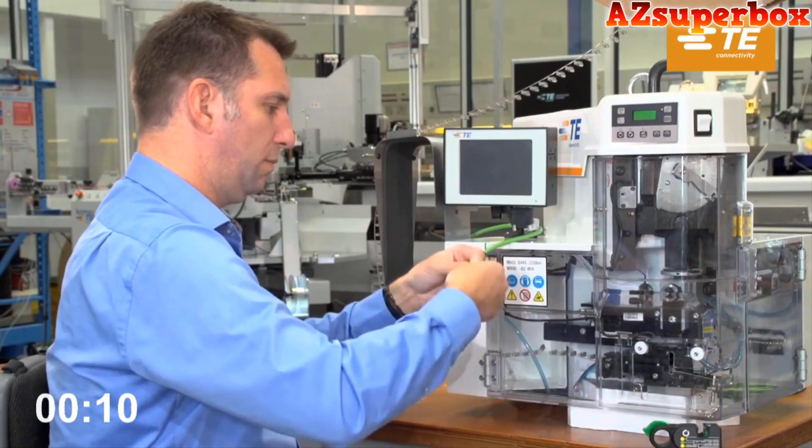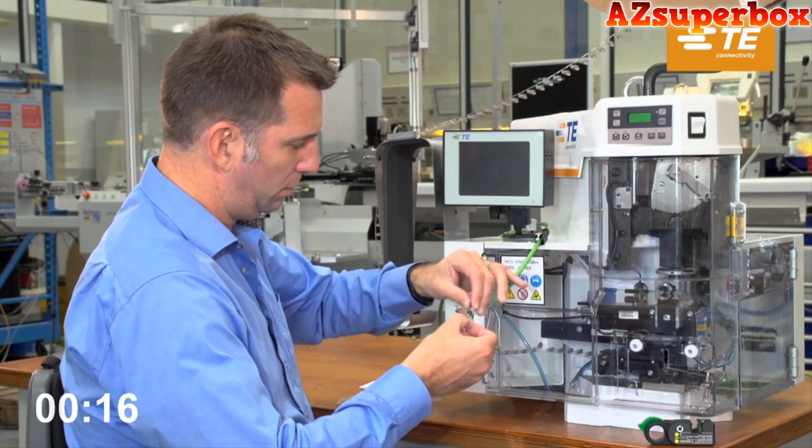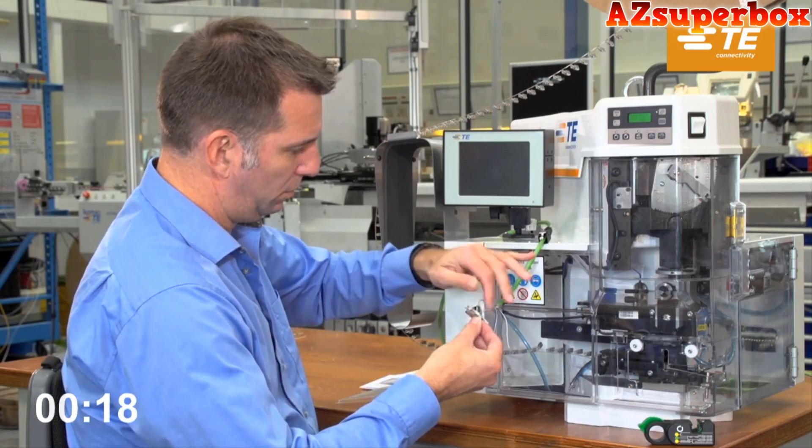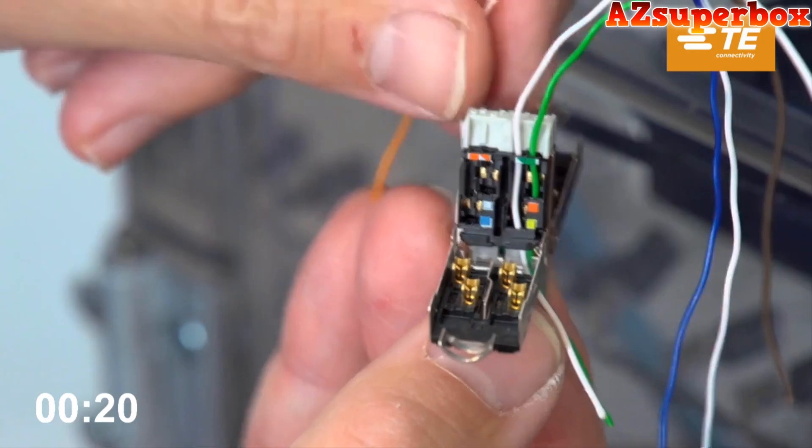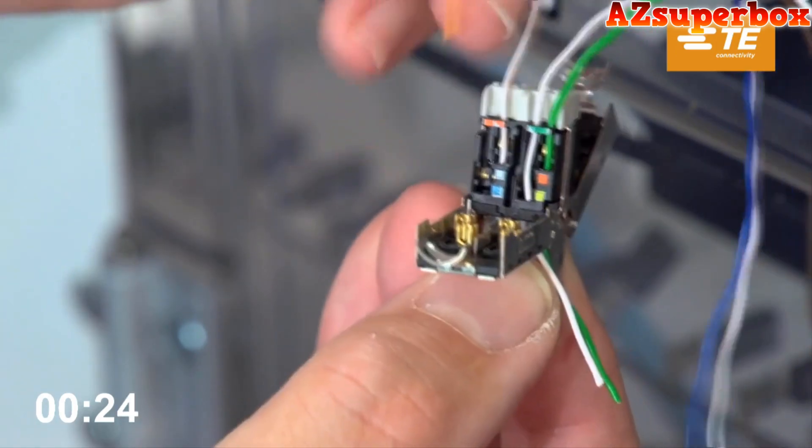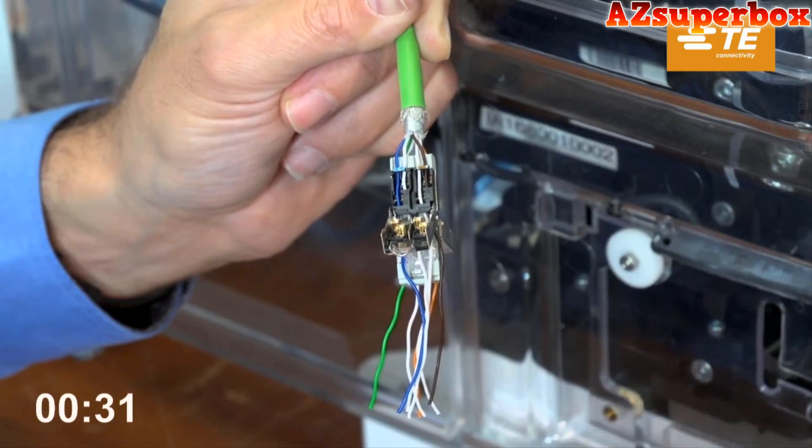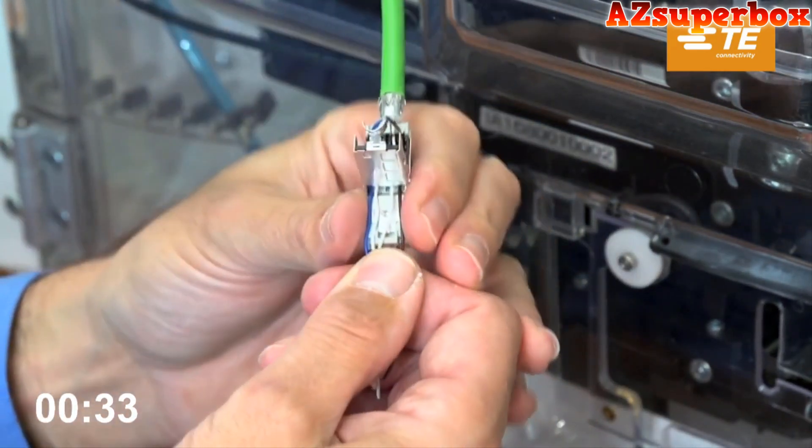Strip about 60mm of the outer jacket of the Ethernet cable, keeping 5mm of the braid intact. Straighten the wires and insert them into the cable manager according to the color coding. All commonly used Ethernet cables with wire sizes ranging from AWG26 to AWG22, stranded and solid, have been tested and approved.